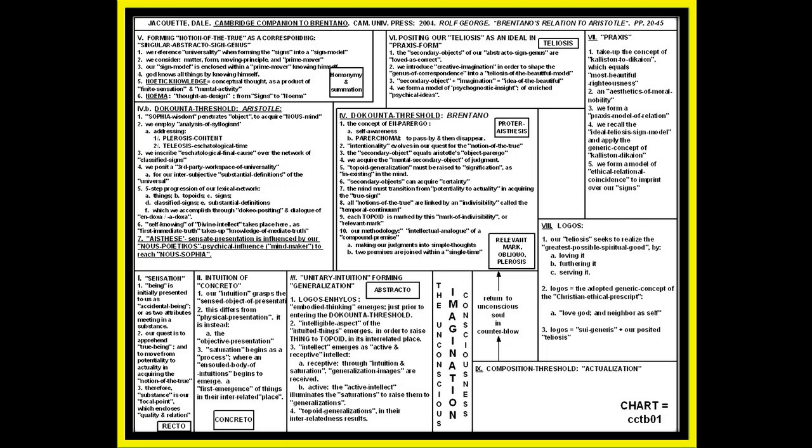Welcome back. It is 8-14 of 2015. We're going to take a look at the Cambridge Companion to Brentano, published in 2004. We're going to look at Ralph George's essay, 'Brentano's Relationship to Aristotle,' on pages 20-45. We begin with sensation, where being is initially presented to us as accidental being.